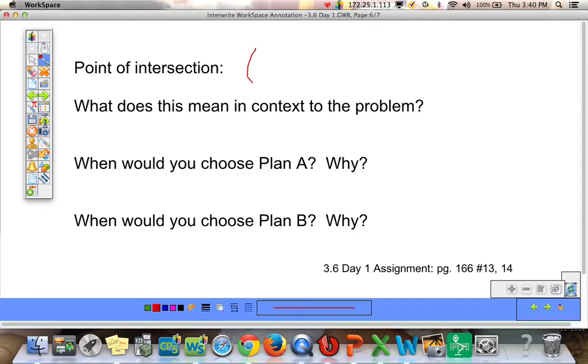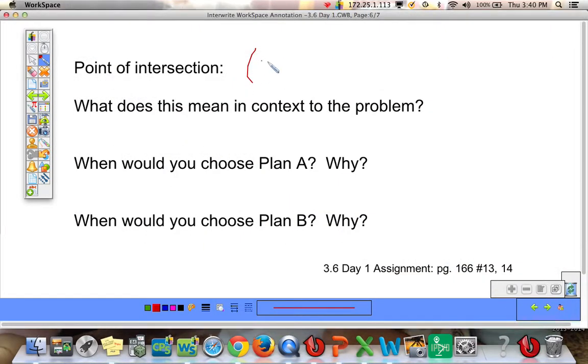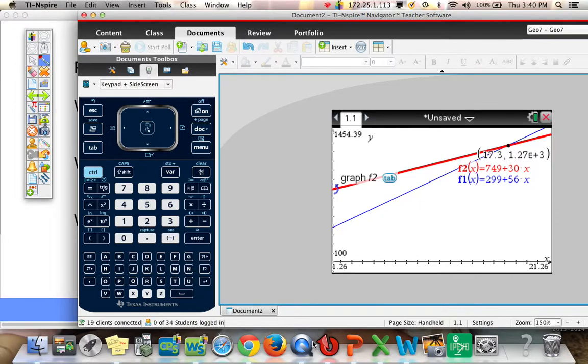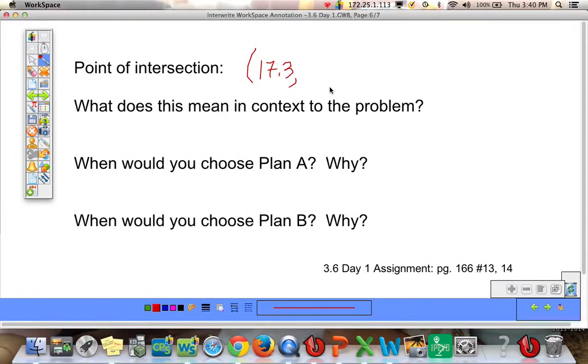Okay. Point of intersection. So again, it was 17.3 and 1.27E plus 3. 1.27E plus 3.